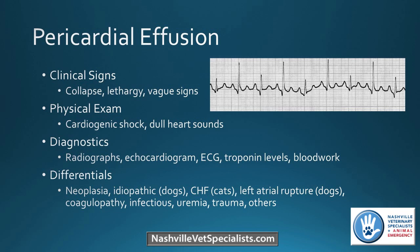Cancer is one of the more common reasons for pericardial effusion. We also see idiopathic pericardial effusion in dogs. In cats, heart failure is more likely to cause it than in dogs. We can see left atrial rupture cause pericardial effusion in dogs — usually small white breed dogs with mitral valve disease. Other causes include coagulopathies, different types of infections, and uremia. Usually cancer, idiopathic, or heart failure are the most common.